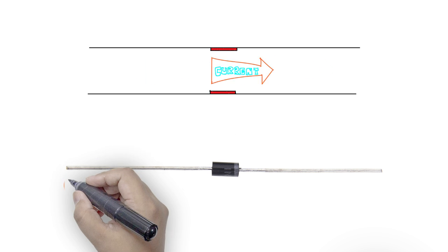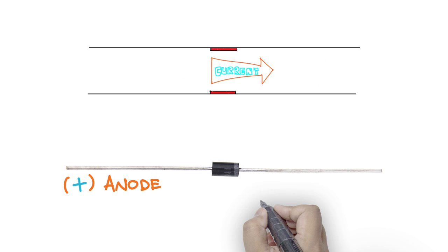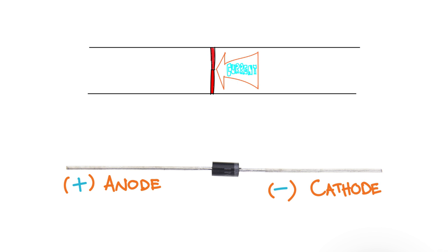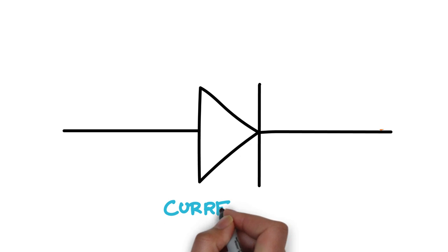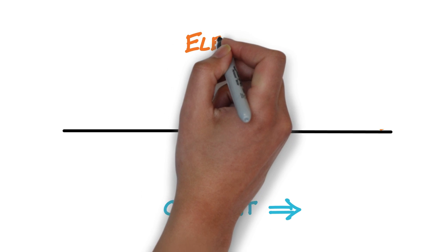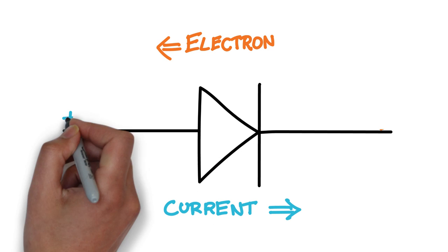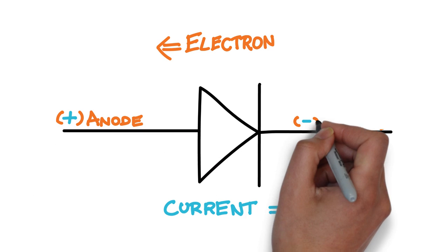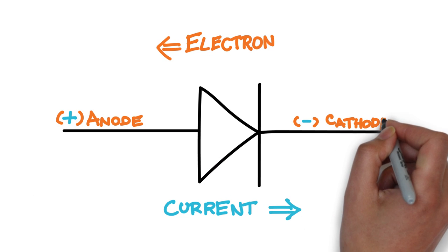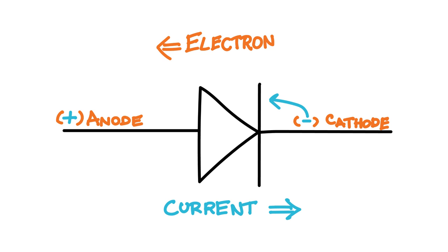A diode has two terminals, a plus terminal called anode, and a minus terminal called cathode. This is the schematic symbol of a diode. The arrow is pointing in the direction of the current, as opposed to the flow of electrons. I usually think of the vertical line at the pointy end of the arrow as it resembles a sideways minus sign, that is the cathode of the diode.